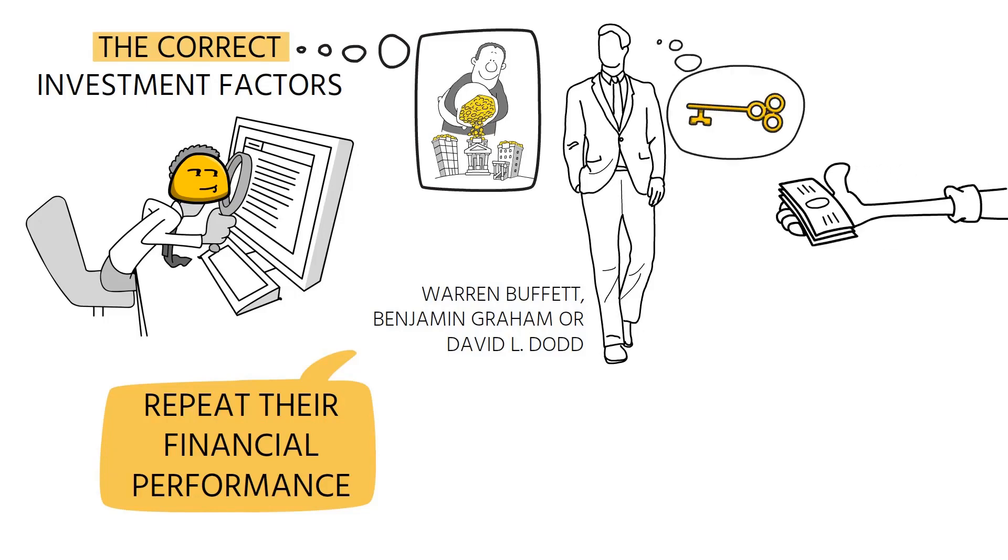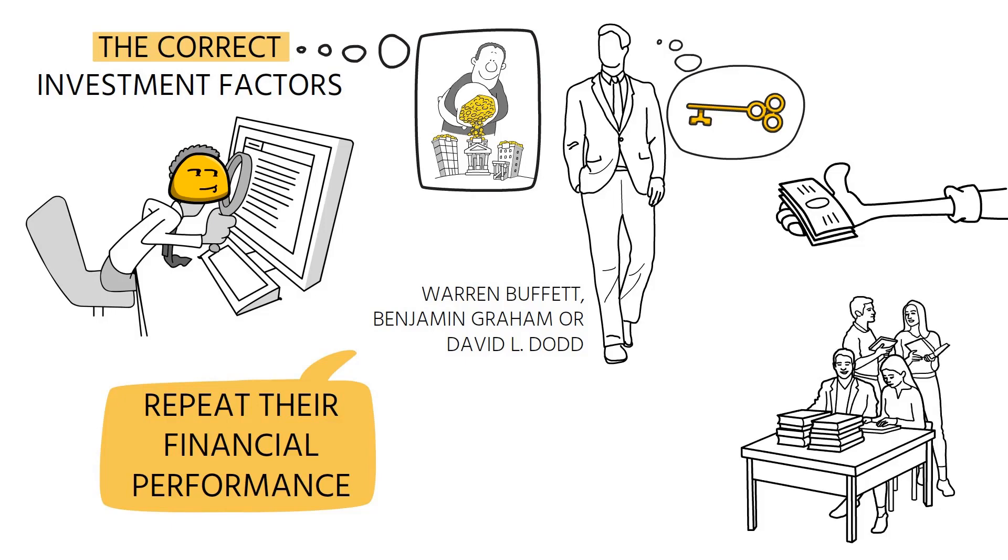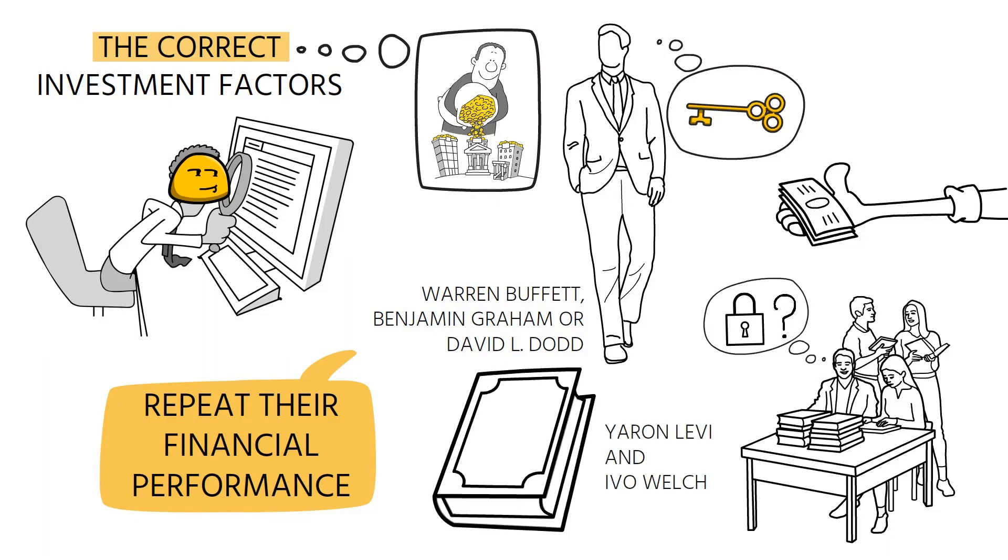Unsurprisingly then, academics and researchers have exerted considerable effort to identify those factors. For example, Jaren Levy and Eva Welch study and explain 600 different factors in their book Long-Term Capital Budgeting.